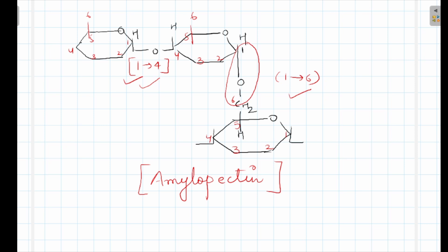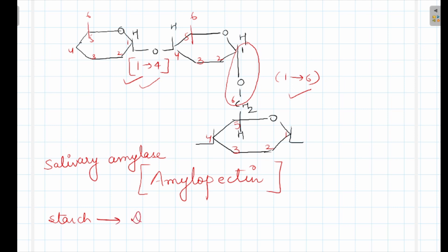Now, starch is hydrolyzed. Carbohydrates is the only biomolecule whose digestion starts in the mouth only. Because in the mouth there is saliva, and in saliva there is an enzyme called salivary amylase. One more amylase is pancreatic amylase also. These amylases hydrolyze starch. Starch is hydrolyzed to dextrin, then it forms maltose. Maltose is a disaccharide made up of two glucose units.